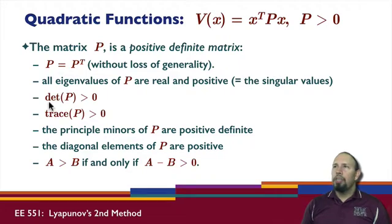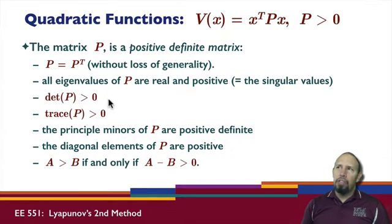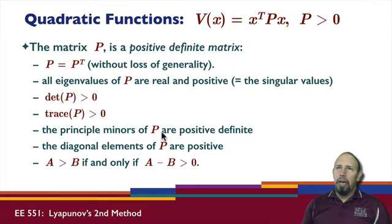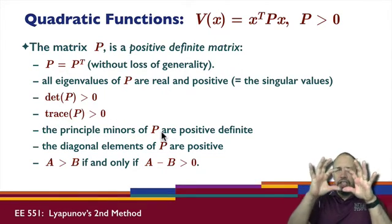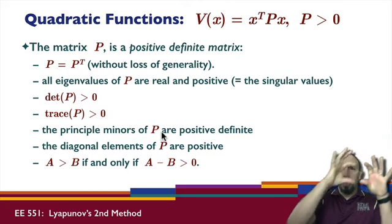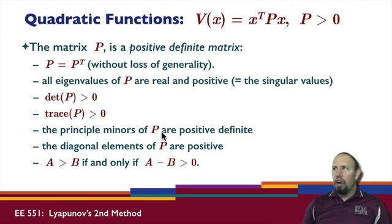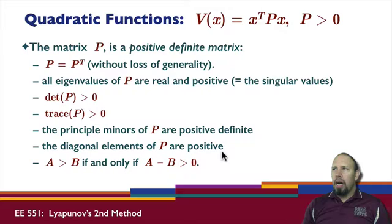In addition, a positive definite matrix satisfies these properties: the determinant of the matrix is positive, the trace of the matrix is positive, and we also have the principal minors — that is, sub-blocks along the diagonal are also positive definite. The diagonal elements of P are also positive.